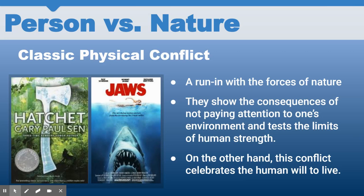Person versus nature is when the protagonist struggles against nature — some outside force like a natural disaster, a tornado, earthquake, tsunami, or bad weather. Usually the character is struggling to survive in that setting. A great example is Hatchet by Gary Paulsen: Brian is stranded in the woods and forced to learn how to survive on his own. All the smaller conflicts he faces are parts of nature, and the major conflict throughout the entire story is simply trying to survive and make it back to safety.